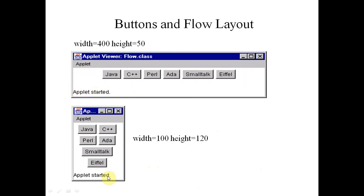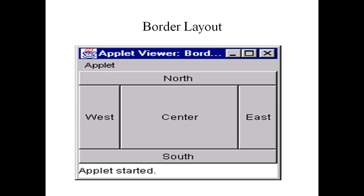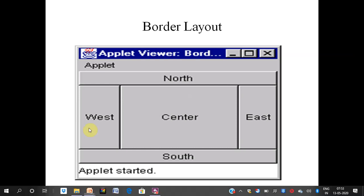If the width is 400, all elements are adjusted in one row. As we decrease the width to 200, elements are adjusted across different rows — in each row we can fit only two elements. So the elements are arranged one by one according to window size in the case of flow layout.